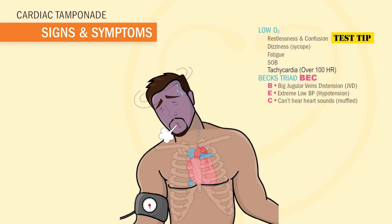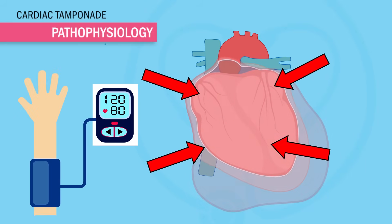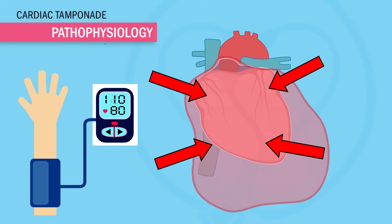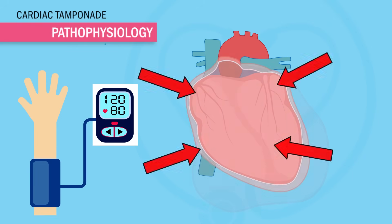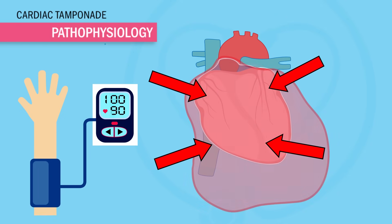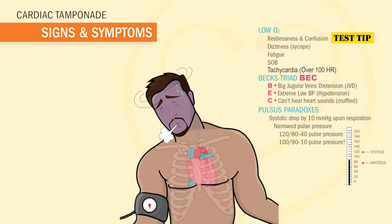Another problem from the heart getting squished is something called pulsus paradoxus, where the blood pressure also gets squished down too — that's a huge test tip. As blood coming out of the heart decreases (decreased cardiac output), the stress put on those blood vessels decreases too, showing a drop in systolic blood pressure, that top number. A drop in systolic blood pressure by more than 10 mmHg during inspiration leads to narrow pulse pressure, meaning the top and bottom numbers are getting closer together. For example, 120 over 80 has a normal pulse pressure of 40, but as the heart gets compressed, the numbers get compressed too — so it becomes like 100 over 90, a pulse pressure of 10.